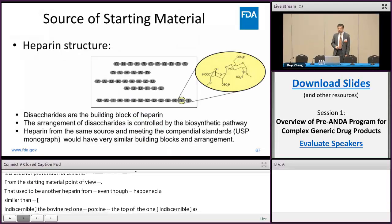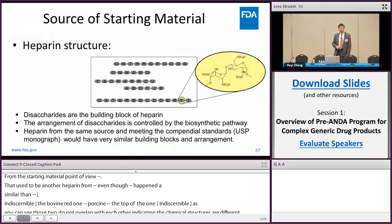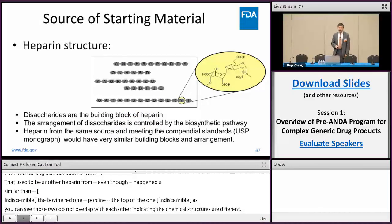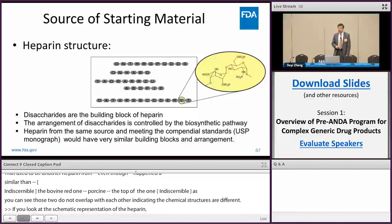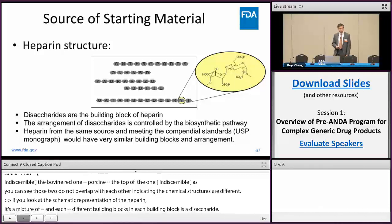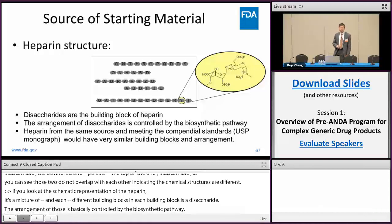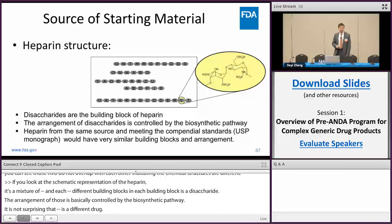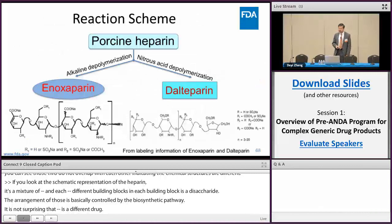Looking at the schematic representation of heparin: heparin is a mixture of polysaccharides, and each chain is made of different building blocks, where each building block is a disaccharide. The arrangement of those building blocks is controlled by biosynthetic pathways, so it is not surprising that porcine heparin differs from bovine heparin. However, heparin from the same source meeting compendial standards — for example, a USP monograph — will have very similar building blocks and arrangement.